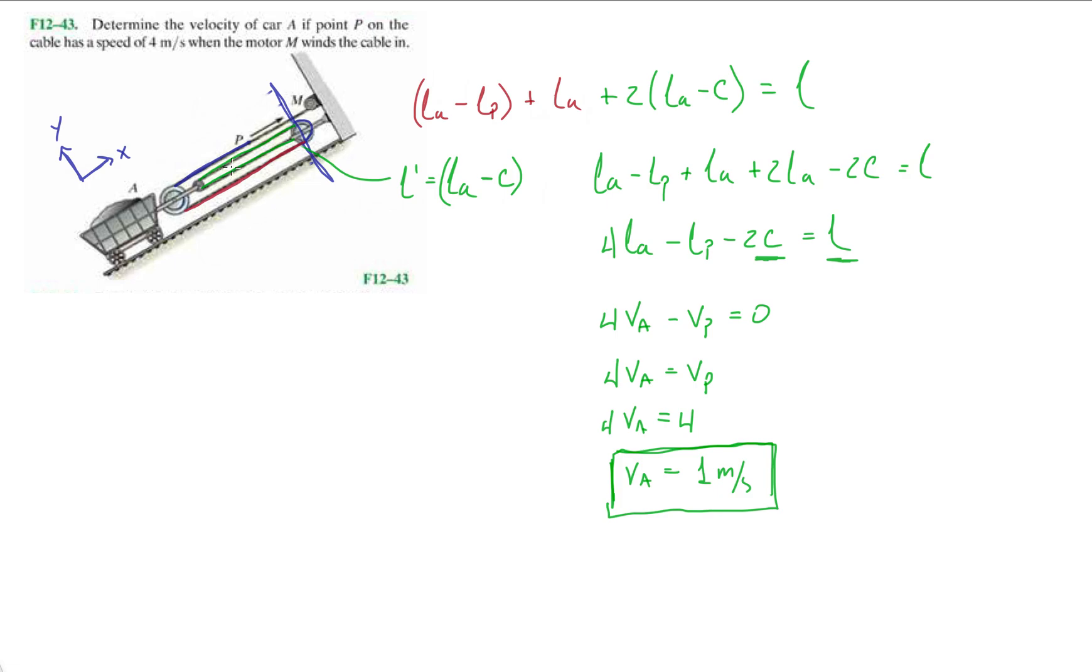We had this part of the rope in red, this part. Then we wanted to sum those, we wanted to sum all those terms together: the blue plus the two greens plus the red. The red was LA here.